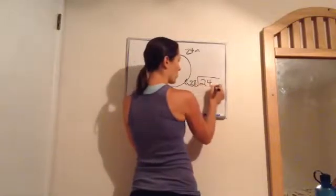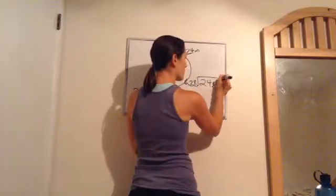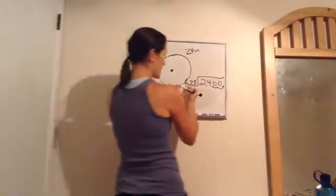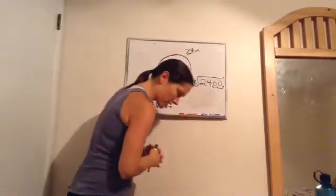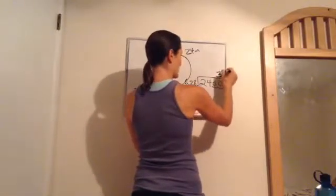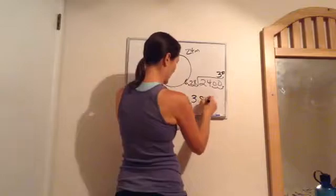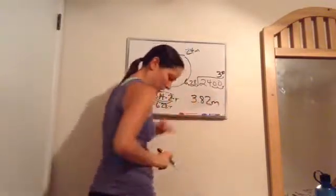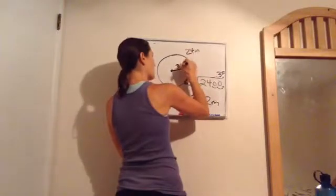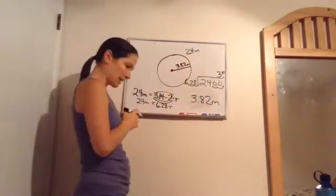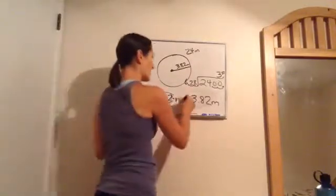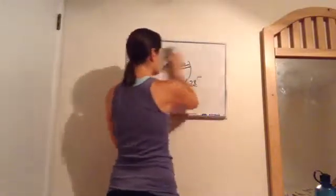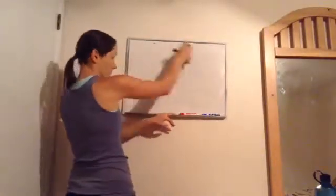628 goes into 2400 and it ends up being 3.82. So the radius equals 3.82 meters. That is how you discover the radius when you know the circumference but not the radius.